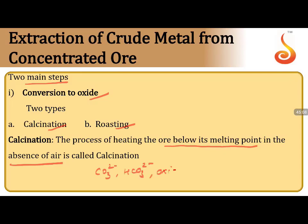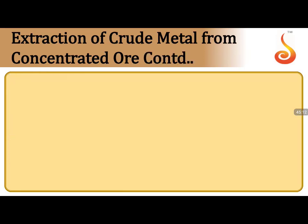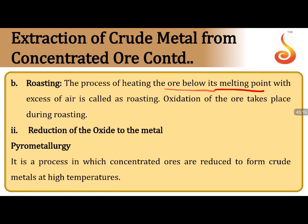Sulfide ores also commonly undergo froth flotation, where pine oil is used as the frothing agent, aniline as froth stabilizer, and xanthates as collectors. Pyrometallurgy involves reduction of oxides to metals at high temperatures using reducing agents. Smelting is a pyrometallurgical process where the physical state change is compulsory — extraction of impure molten metal from ore at high temperature using a suitable flux and reducing agent. All three components — ore, flux, and reducing agent — are compulsory.